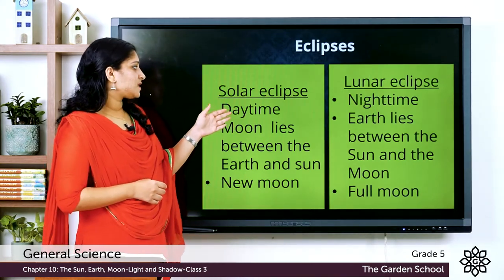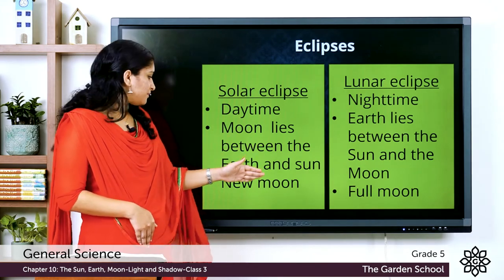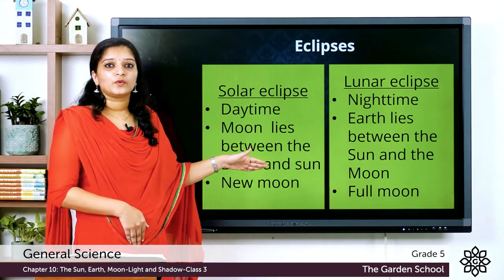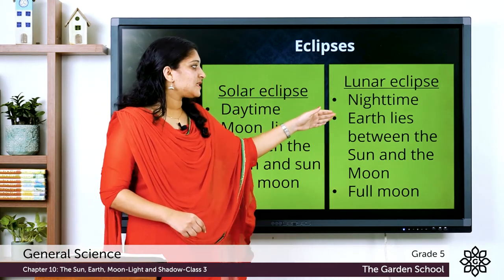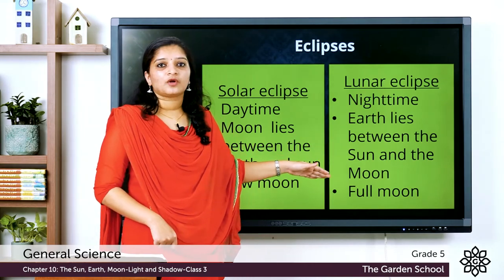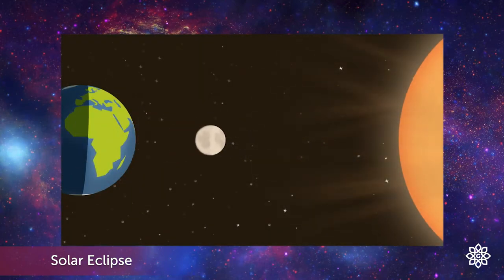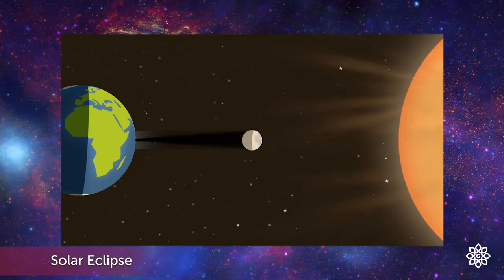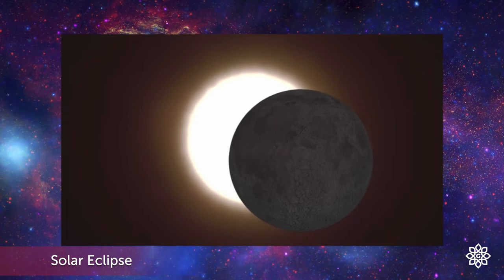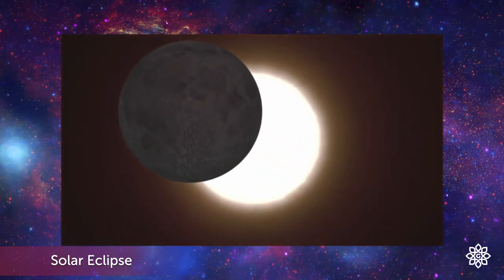Let's compare the two types of eclipses. The solar eclipse occurs at daytime, and the moon lies between the Earth and the Sun. It occurs on a new moon day. A solar eclipse occurs when the moon moves between the Earth and the Sun, blocks the Sun's light, and casts a shadow on the Earth. When the moon completely covers the bright disk of the Sun, that's a total solar eclipse, and it happens roughly every year and a half somewhere on Earth.